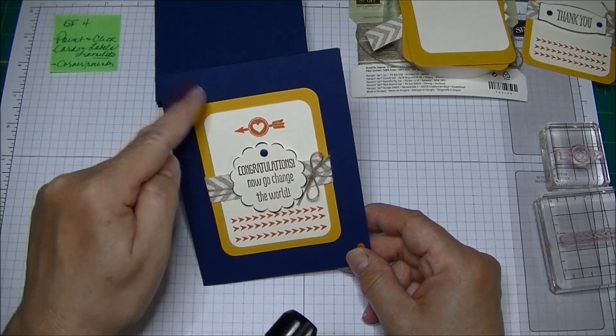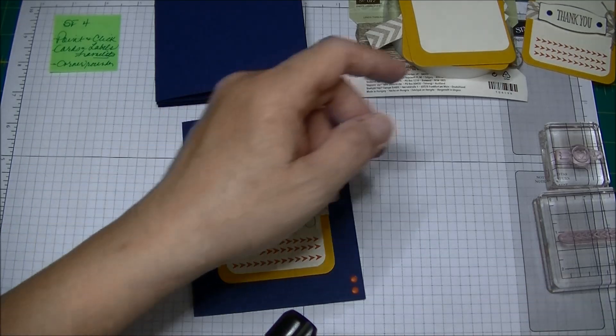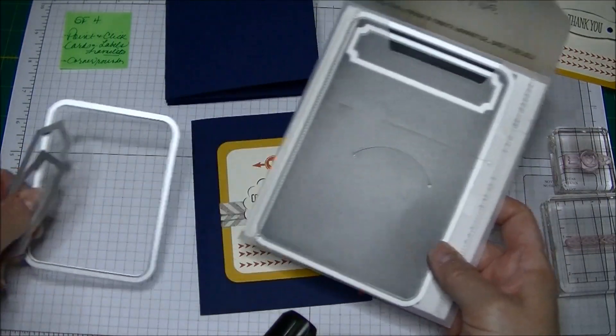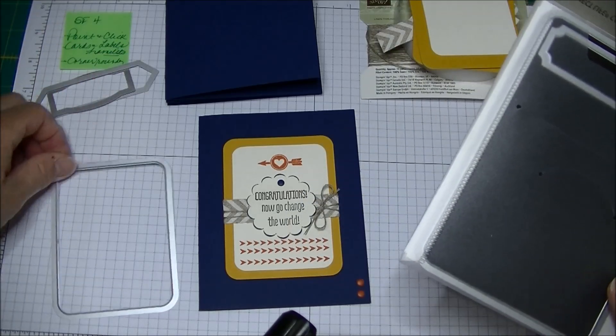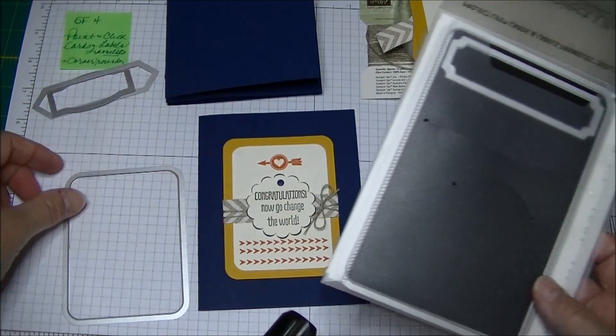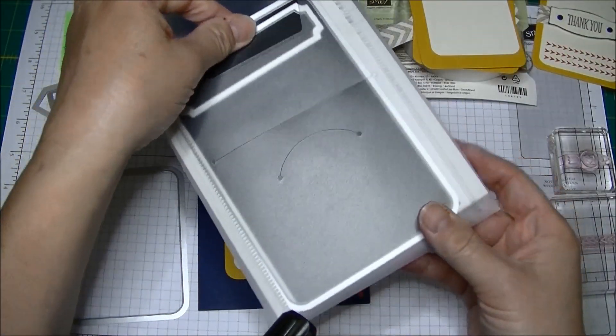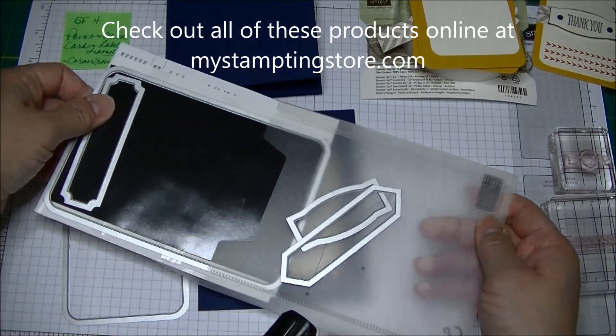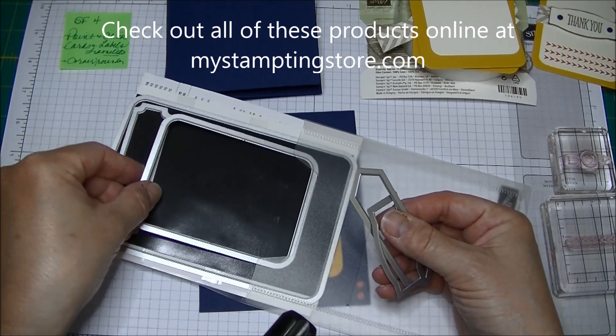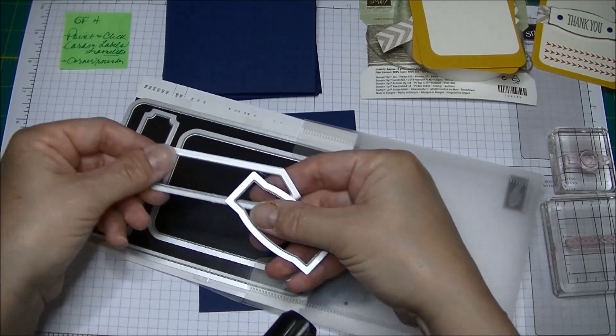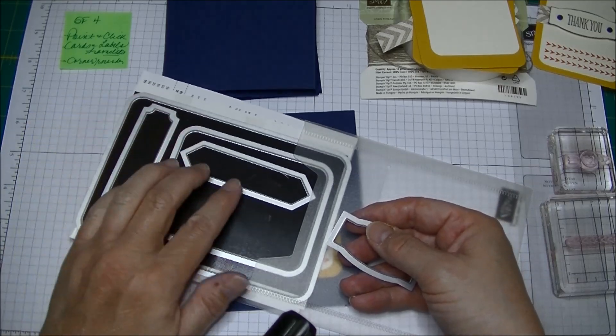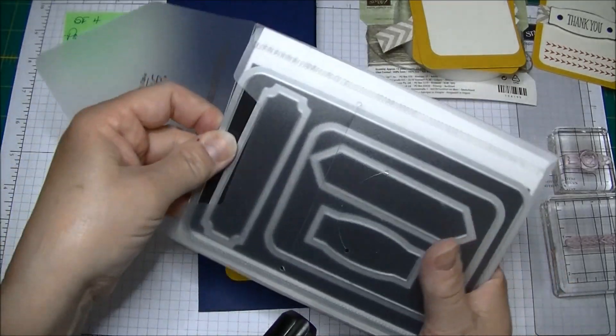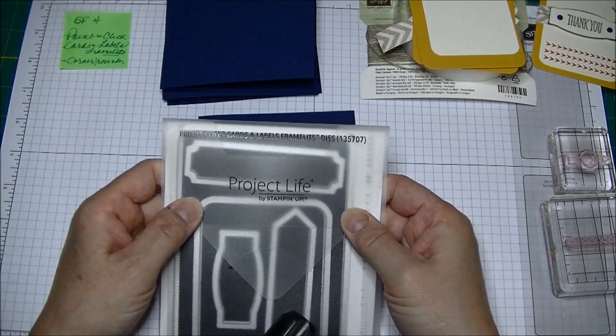I used the framelits because Project Life has a set of framelits and I really love these. These are the ones I'm going to show you today. I used this one to cut out the mat and automatically give it curves. Notice there's one larger one in the set and then you get these three fabulous little sentiment framelits. This is the Project Life Cards and Labels Framelits dies.